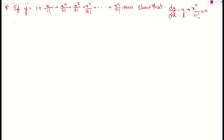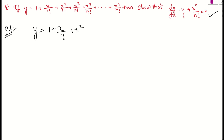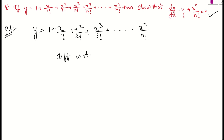Let us see what is the question given here. They are asking that y equals 1 plus x by 1 factorial plus x squared by 2 factorial plus x cubed by 3 factorial and so on up to x to the power n by n factorial. Then what we need to show: we need to show that dy/dx minus y plus x to the power n by n factorial must be equal to 0. For proving this, first of all we will consider y, and we will differentiate this function with respect to x on both sides.